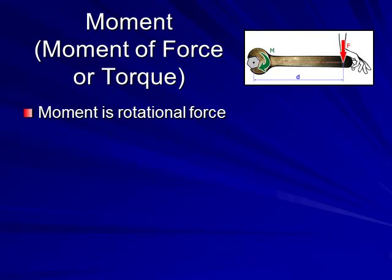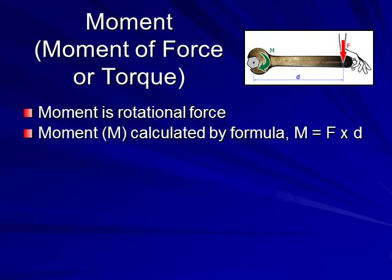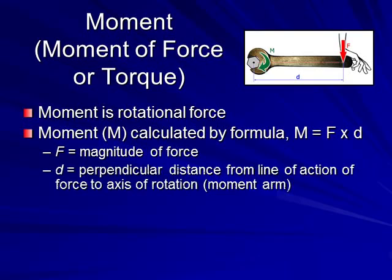While a force is a linear quantity, a moment, or moment of force, or torque, is the rotational force. Moment is calculated, M, by the formula M equals F times D, where F is the magnitude of the force, and D is the perpendicular distance from the line of action of the force to the axis of rotation — otherwise known as a lever arm or moment arm. In the wrench example shown above, we have a force pointing downward from the hand, acting over a distance D from the point of application of force to the center of rotation at the center of the bolt head. That distance D is the moment arm. So force times D, the moment arm, gives us the moment.